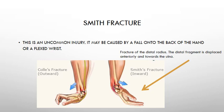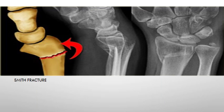A Colles fracture occurs more often, but when a person falls on the back of their hand or on a flexed wrist, a Smith fracture can occur. That is where the displacement is in the opposite direction to a Colles — a volar displacement. In this image you can see the displacement during a Smith fracture, where the distal part moves in a volar direction.